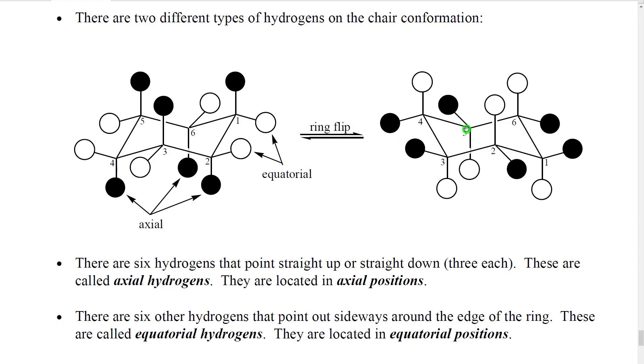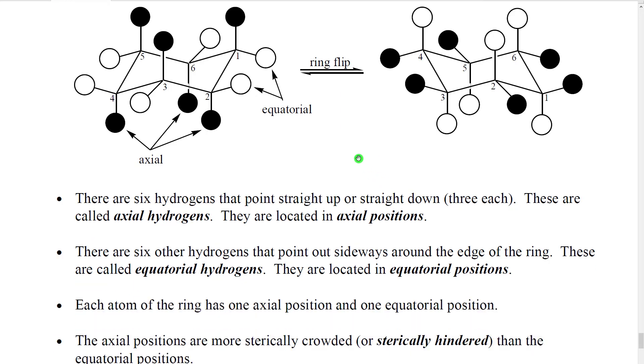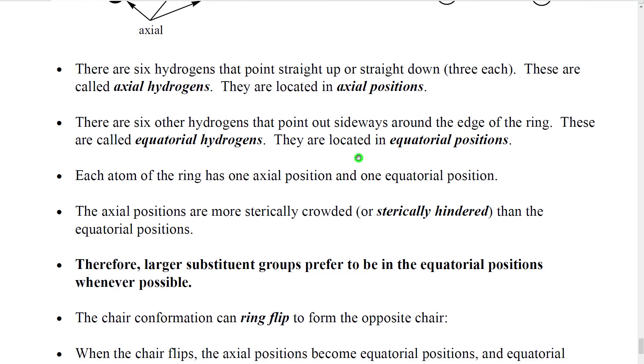So this process is called the ring flip, and most six-membered rings can do this pretty much spontaneously, just by moving along the potential energy profile, going through a boat, and going back down to the flip of the chair.